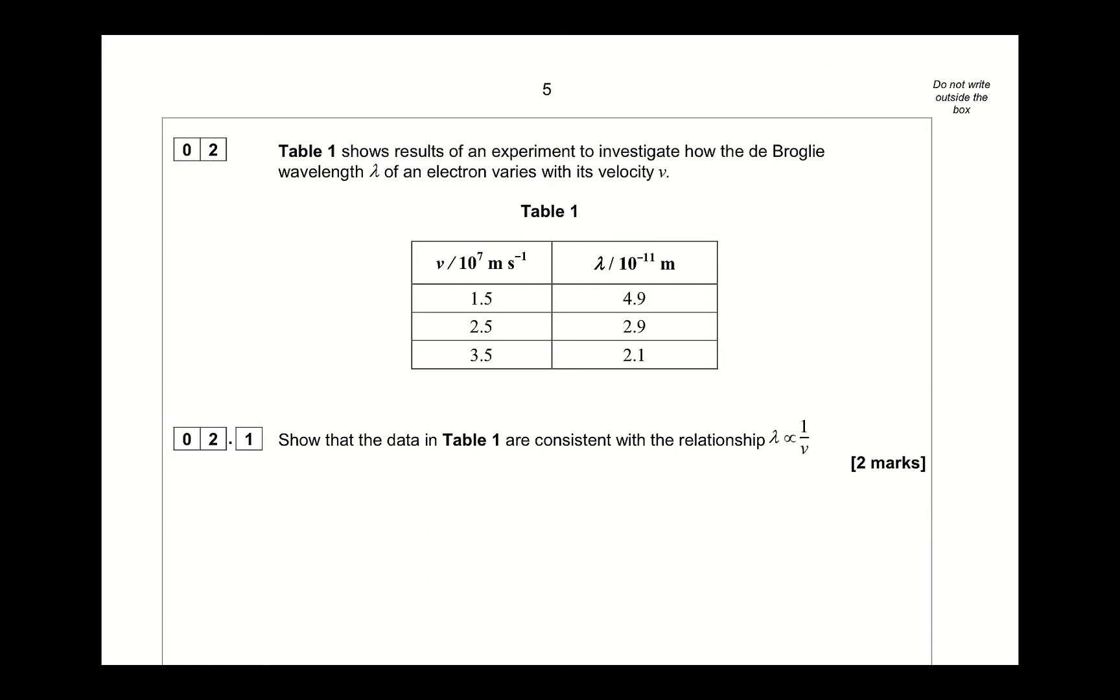Alright, we're going to look at question 2 from the 2018 A-Level Paper 1 from AQA. Table 1 here shows an experiment for the de Broglie wavelength, how it varies with velocity v. Show that the table is consistent with the relationship lambda is proportional to 1 over the speed.